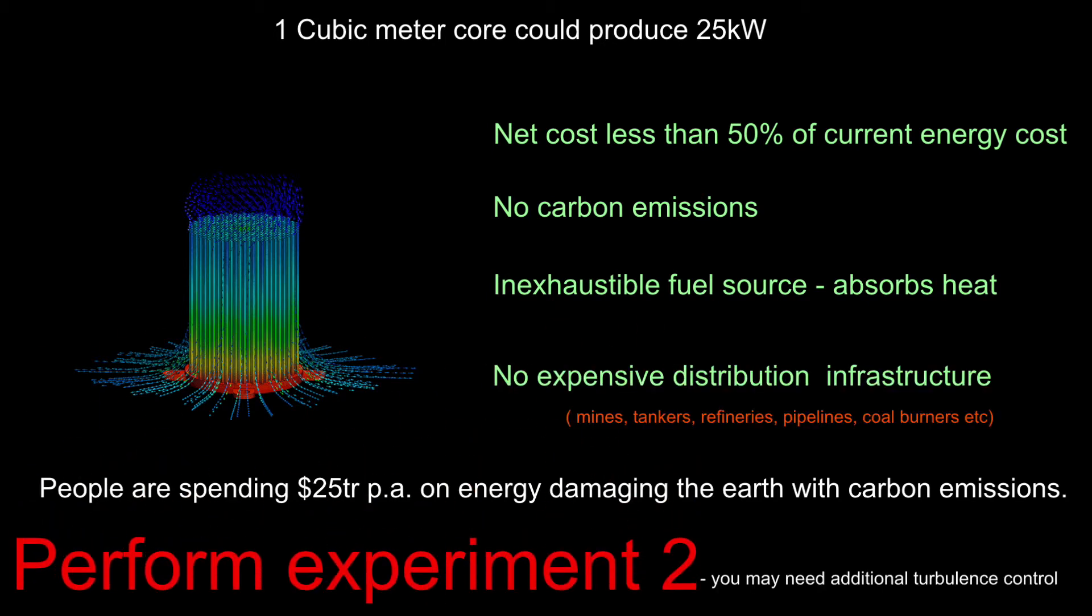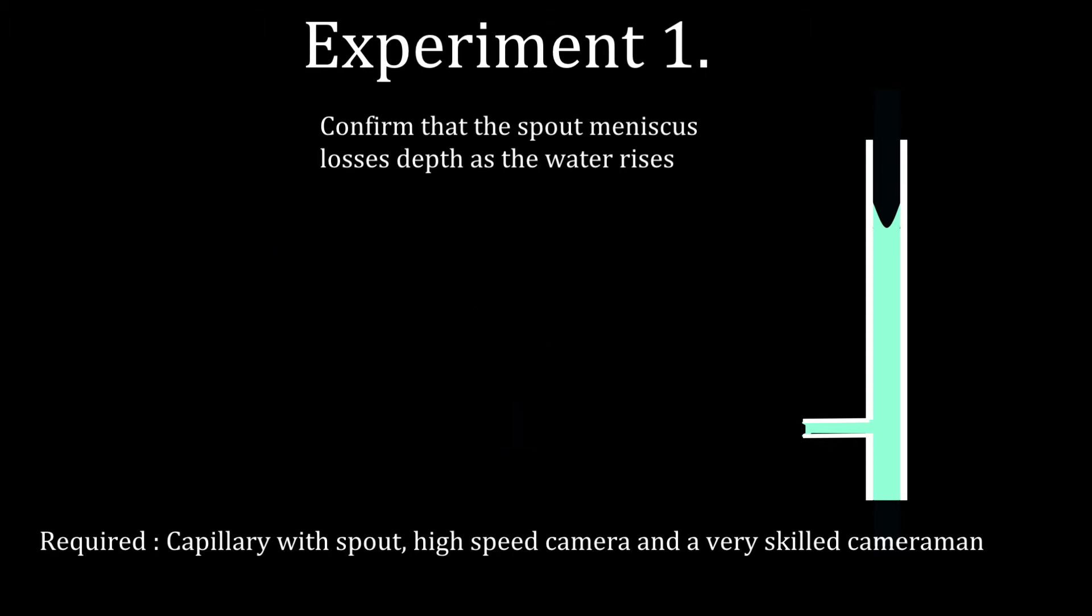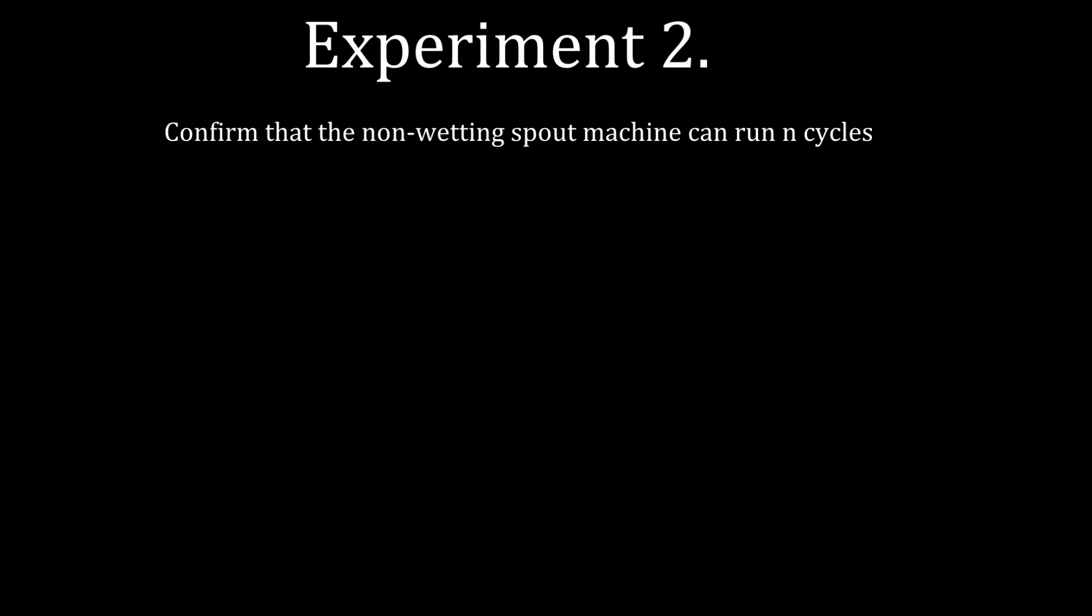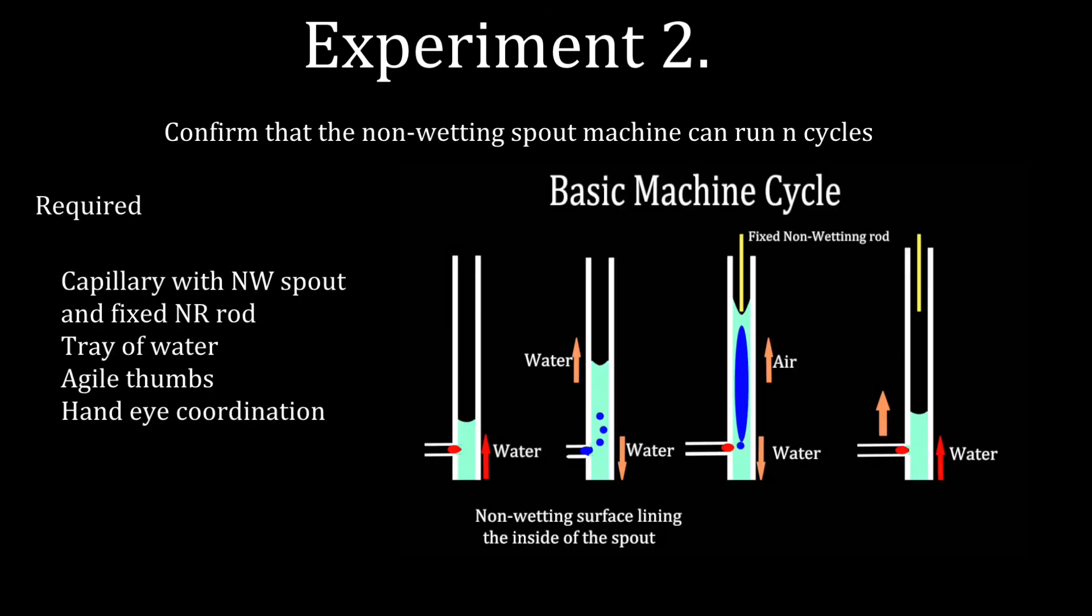Reduce cost, no carbon, inexhaustible. We really want to see if it works. Experiment 1: verification of the spout meniscus behavior. This verifies the pressure equations. The important experiment is experiment 2: confirm that the non-wetting spout machine can run cycles.